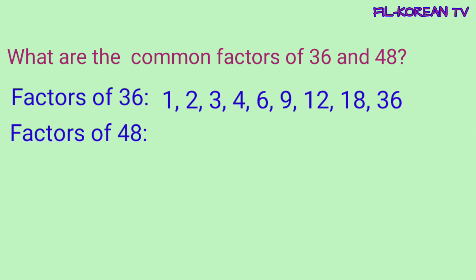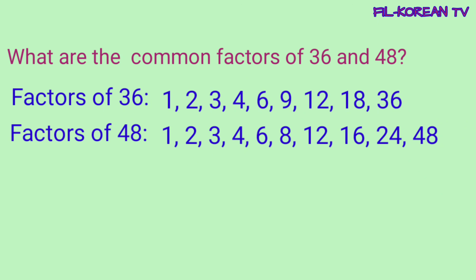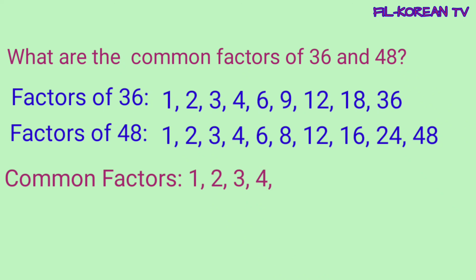Ngayon naman, kunin natin yung factors ng 48. Ang 48 ay divisible by 1, 2, 3, 4, 6, 8, 12, 16, 24, and 48. Ito lahat ang factors ng 48. Ngayon, kunin natin yung common factors ng 36 at 48. Ang kanilang common factors ay 1, 2, 3, 4, 6, at 12.